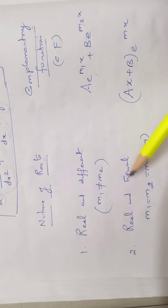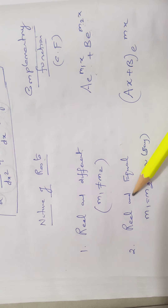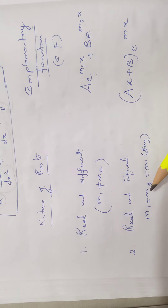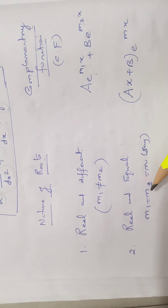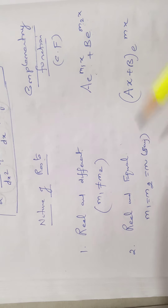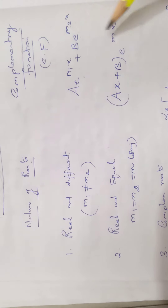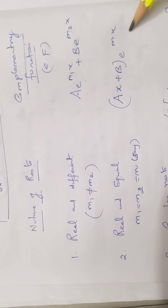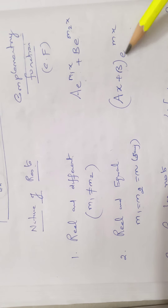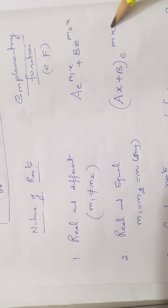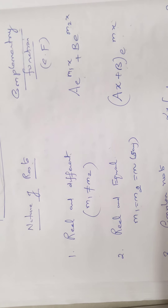Suppose the roots are real and equal, meaning m₁ = m₂ = m. Then the complementary function is (ax + b)·e^(mx).